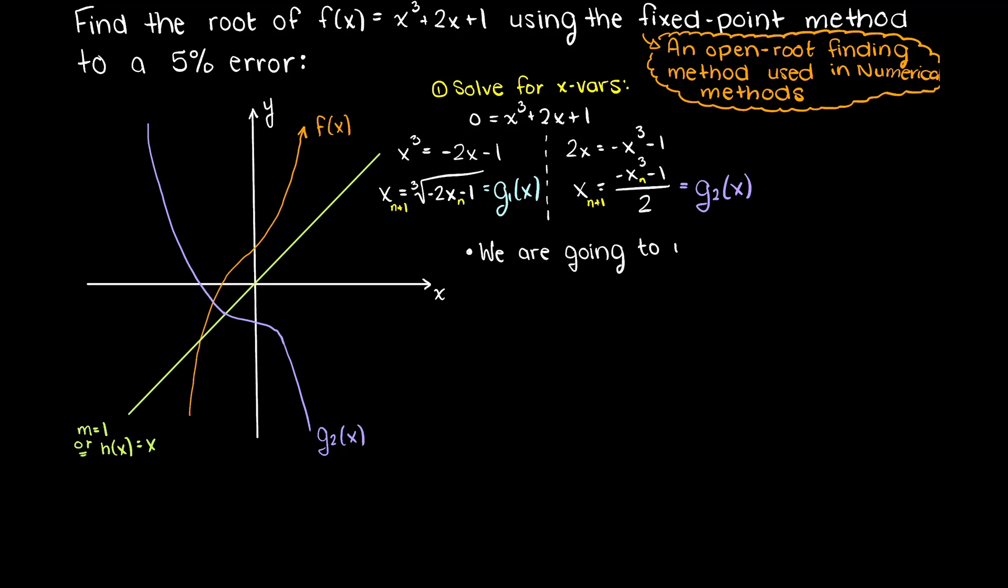So now we are actually able to begin our algorithm. Firstly we need to plug our initial guess into our g2 function, and solve. In this first step we get minus 0.532.